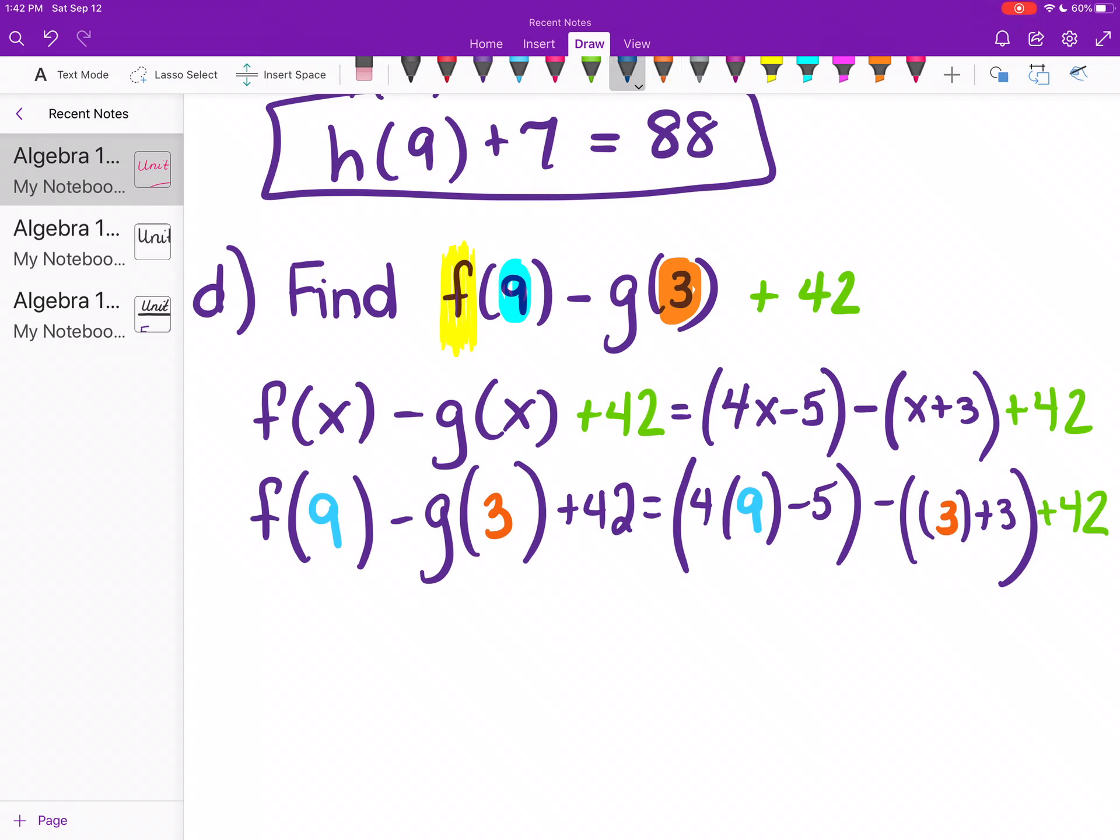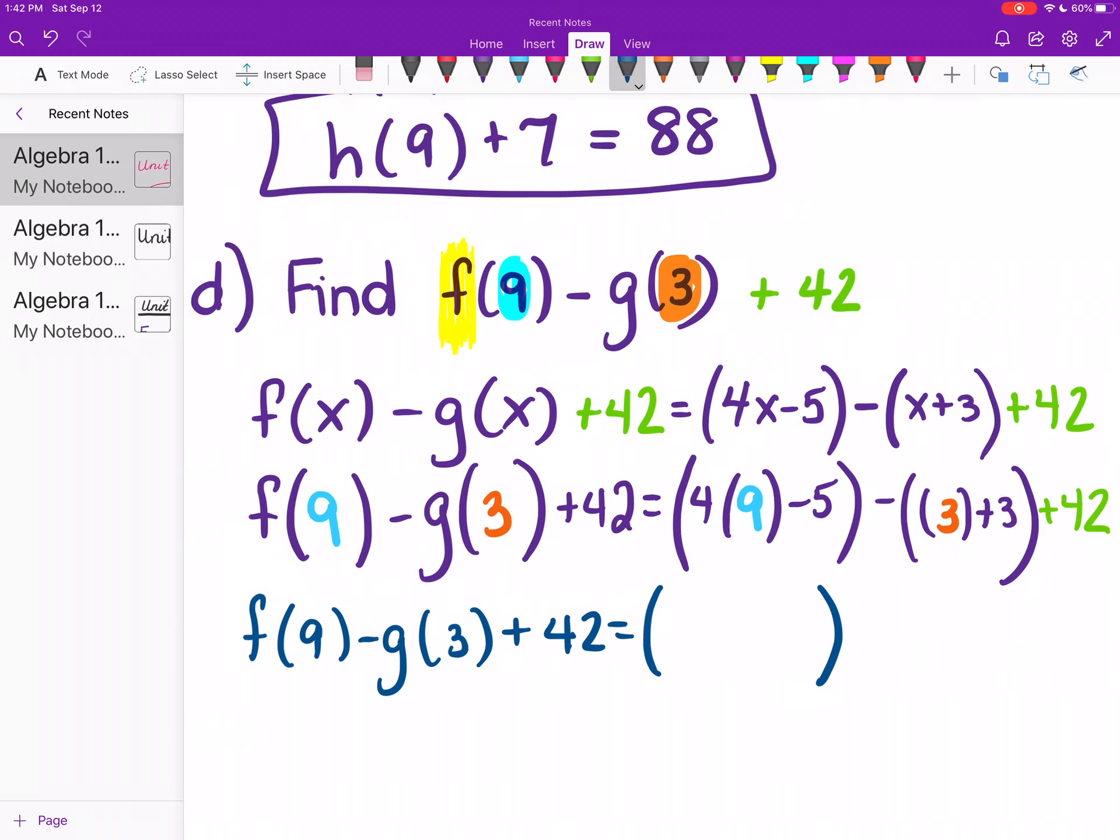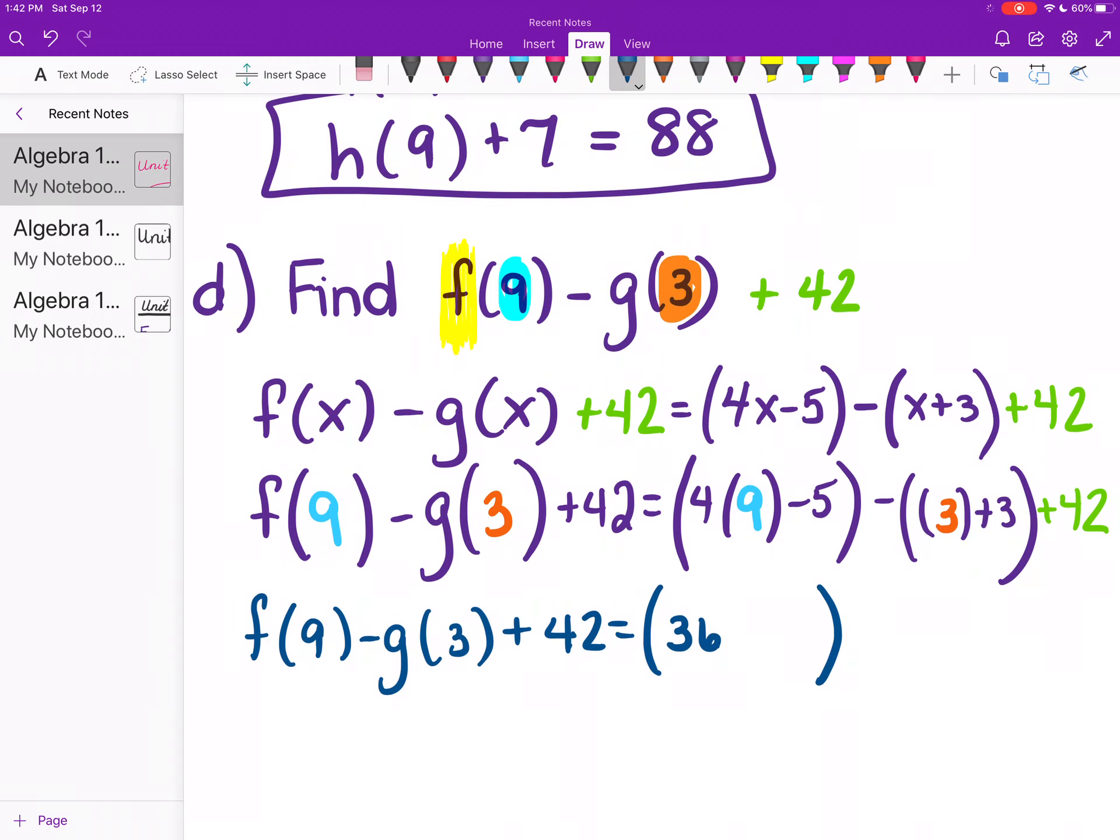Again, we're going to leave the left-hand side alone. So f(9)-g(3)+42. We're going to simplify and evaluate the right-hand side. So in that first parenthesis, the first thing I can do is 4 times 9 is 36. And then we have a minus 5 still there. In that second parenthesis, well, there's nothing in that 3. So we can just do 3 plus 3 is 6. I'm going to leave the parenthesis for now. If you're not sure, leave the parenthesis. We can always take it away later. And then again, we still have that 42 sitting on the end just waiting to be added. Okay?